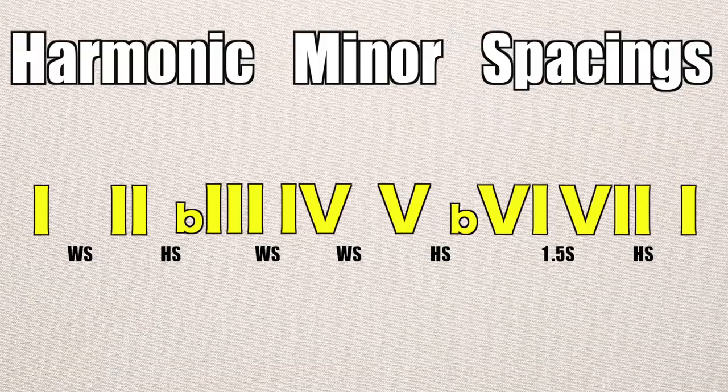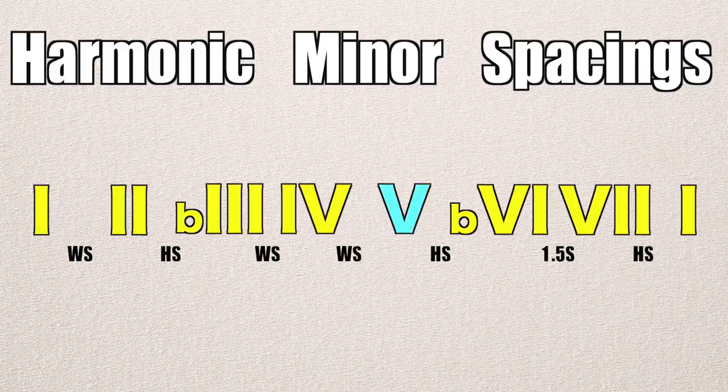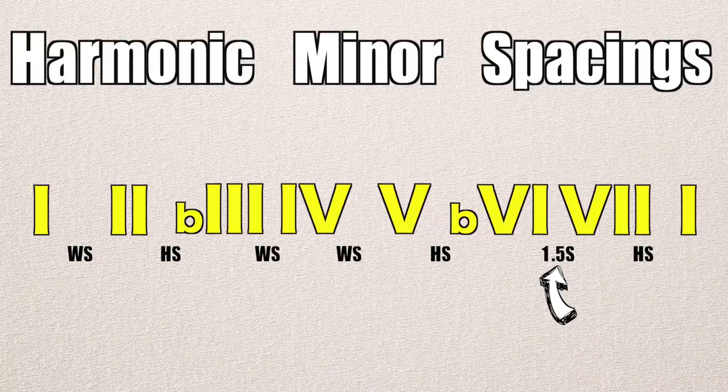Moving on to our next base scale, very similar to the Jazz Minor, is the Harmonic Minor. With this, we have the same thing as our last scale, but the sixth note is now a half step lower. This creates a musical spacing of 1.5 steps between the sixth and seventh scale degrees, which introduces an interesting sound not found anywhere else. All the derivatives we found in the Jazz Minor can also be found here. Here's a chord progression and melody using the Harmonic Minor.